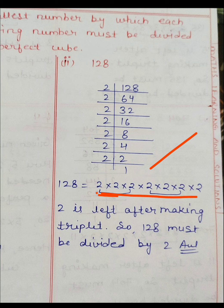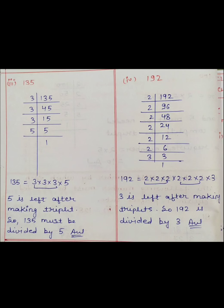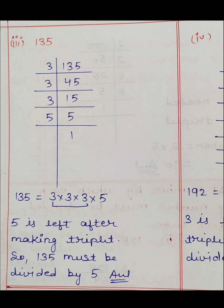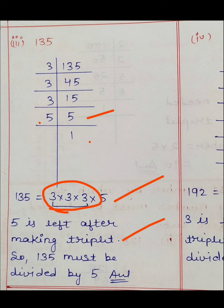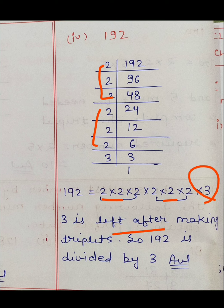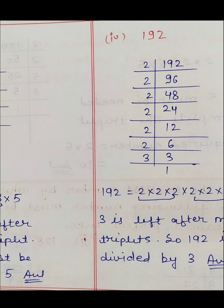Next is 128। 128 के prime factors में 2 आया 7 times। पहला triplet complete, दूसरा triplet complete, 2 extra बचा। 2 is left after making triplet, so 128 must be divided by 2। Third is 135: 135÷3=45, 45÷3=15, 15÷3=5। 3 का triplet complete, 5 extra। 5 is left, so 135 must be divided by 5। Fourth is 192: prime factors में 2 के 2 triplets, 3 extra। 3 is left, so 192 must be divided by 3।